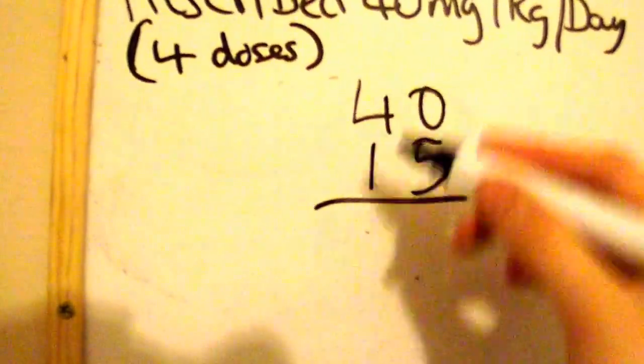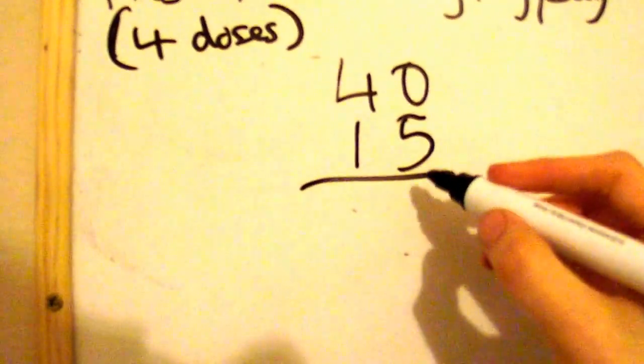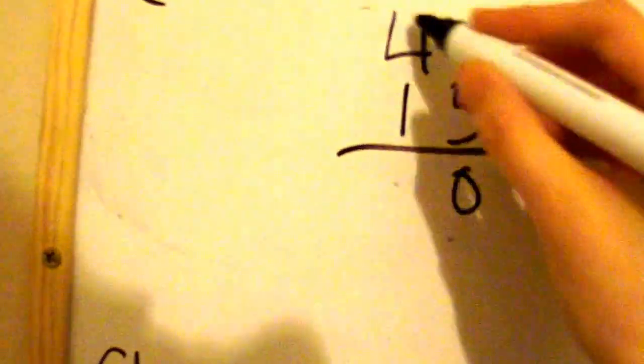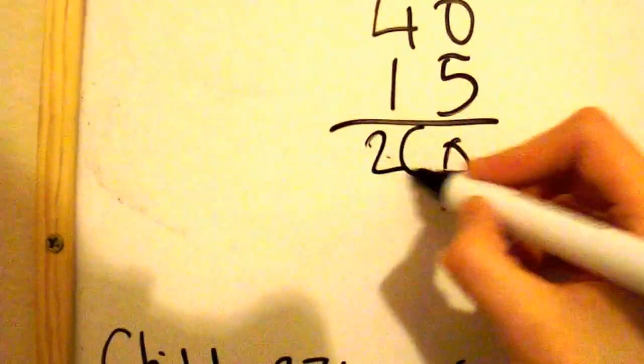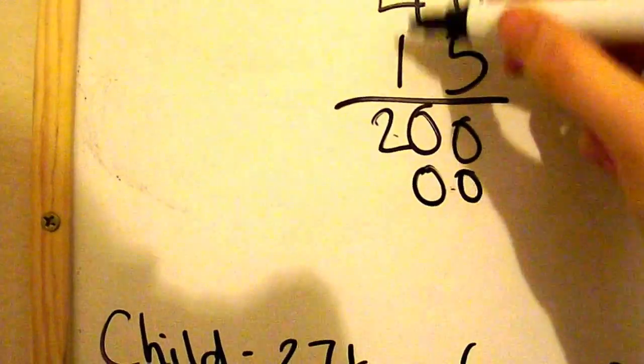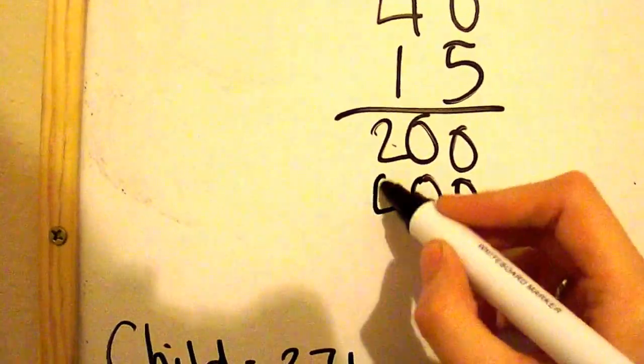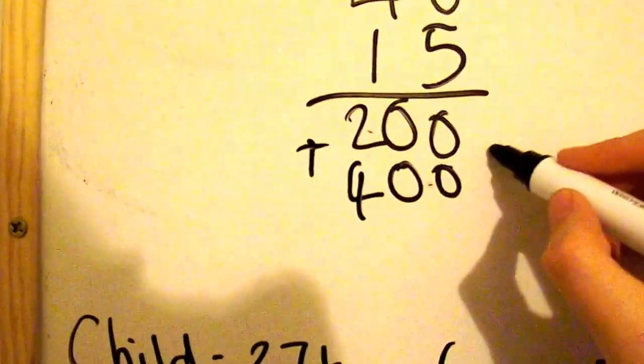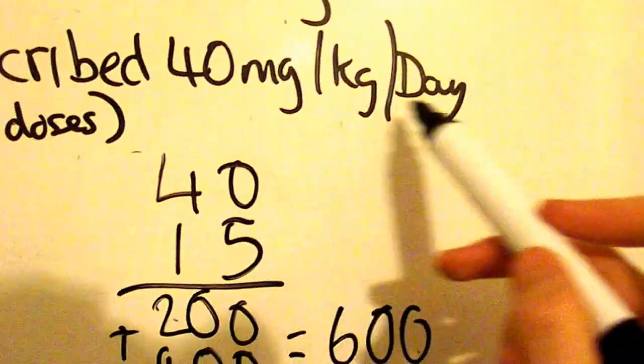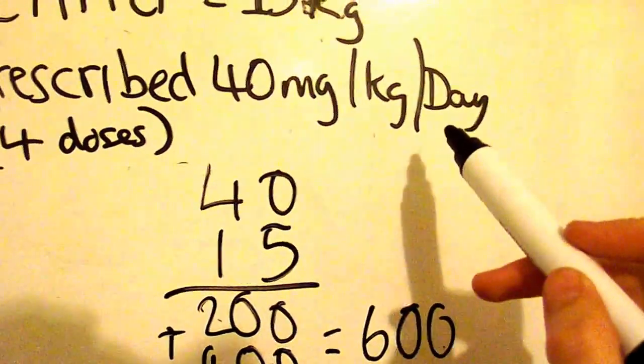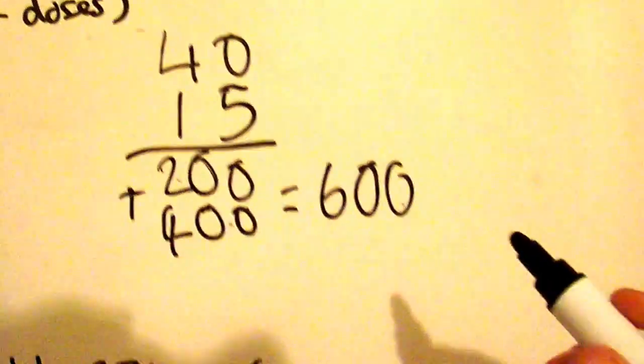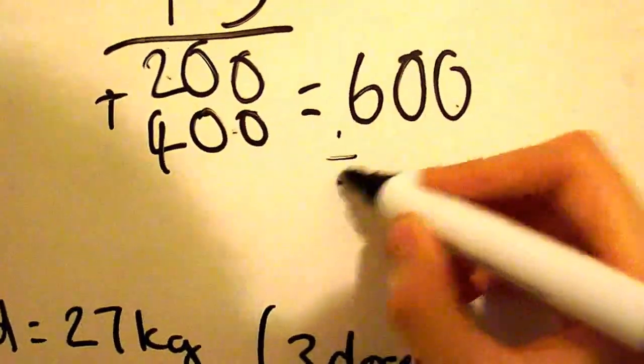So here you might be able to do this in your head but I'm just going to do it on here for the purpose of this. So 5 times 0 is 0, 5 times 4 is 20, then you put your 0 there, 1 times 0 is 0 and then 1 times 4 is 4. So you plus these, that equals 600. But that gives you what it is per day. And as you can see here, they want 4 doses per day. So then what you're doing is dividing this by 4.